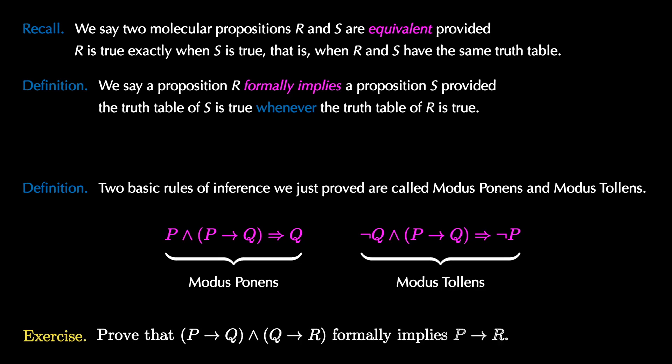Why don't you go ahead and try this yourself? Use an eight-row truth table to prove that P implies Q and Q implies R formally implies P implies R.